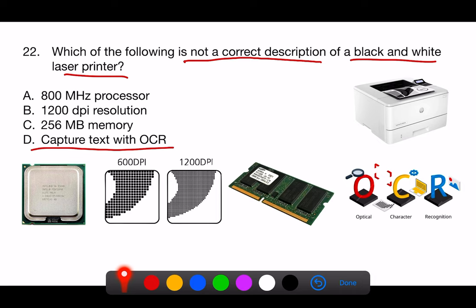C. 256 MB memory. Memory in a printer is used to store print jobs before and during the printing process. A printer with 256 MB of memory has enough capacity to handle most standard print jobs in a personal or small office setting without significant delays.